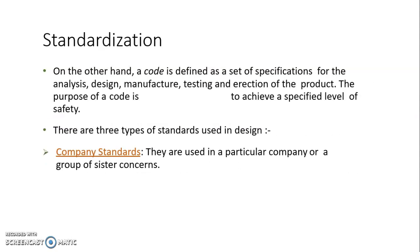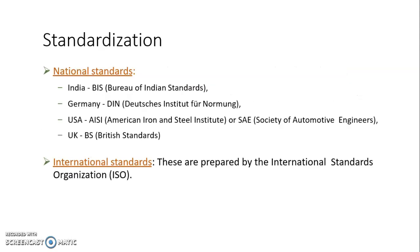A code is defined as a set of specifications for the analysis, design, manufacture, testing, and erection of a product; its purpose is to achieve a specified level of safety. There are different types of standards. Company standards are unique to each company, and every company will have its own standards that must be satisfied.